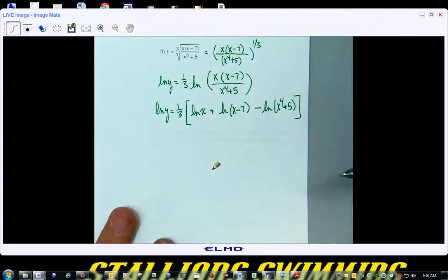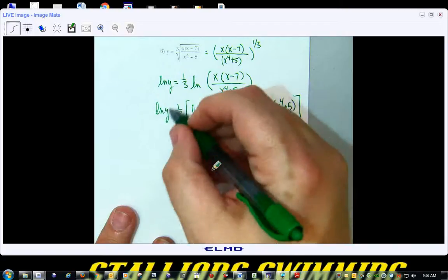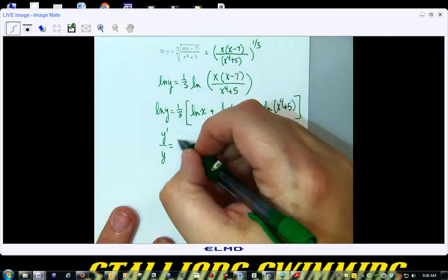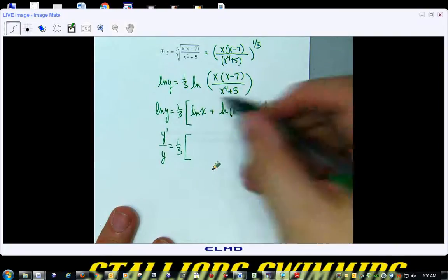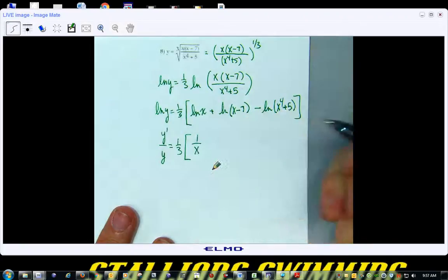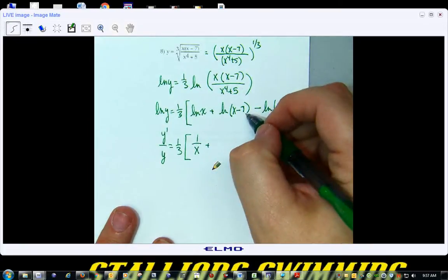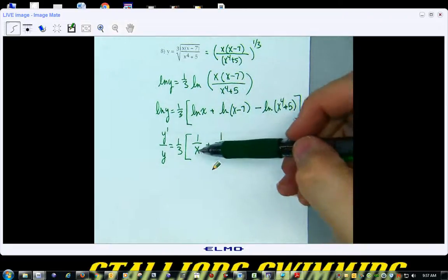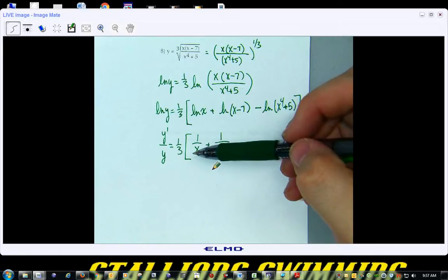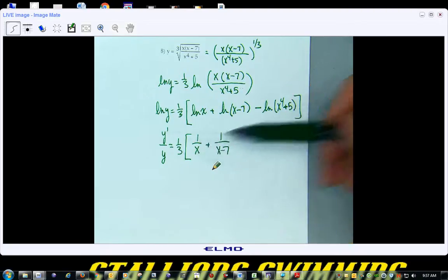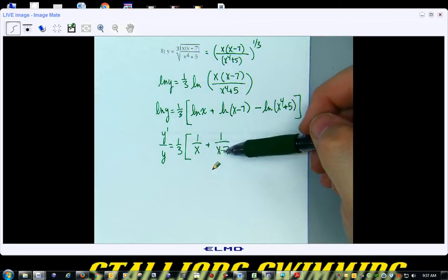Now, can we differentiate? All right, natural log of y is y prime over y. Then we're going to get 1/3rd times, natural log of x is 1 over x, plus, natural log of x minus 7, the derivative is 1 over x minus 7. Well, first off, if you remember what I said the other day, take the chain rule every single time that you take a derivative and you're in business. Derivative of x is 1, so we don't multiply anything. Derivative of x minus 7 is 1, so we don't multiply by anything.